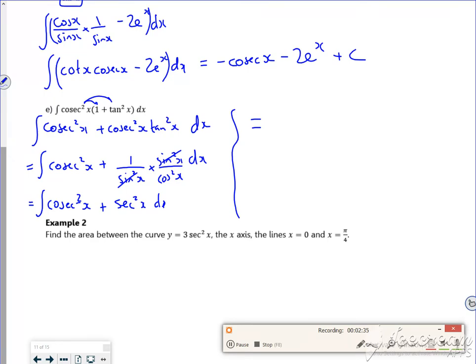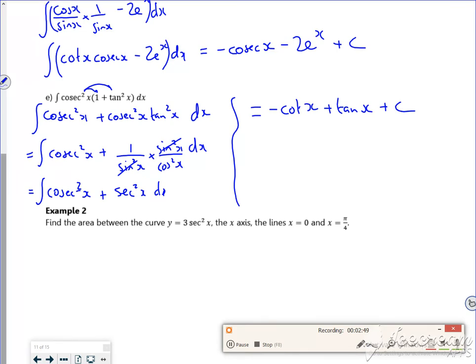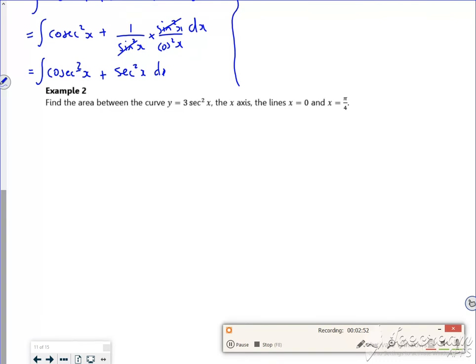So we know that cosecant goes to -cot, and sec² goes back to tan. I think there's an easier way of doing that one. So I'm on 2 hours 46... or 2 hours, it feels like it. I've got 2 minutes 46. Let's see if we can do this one.